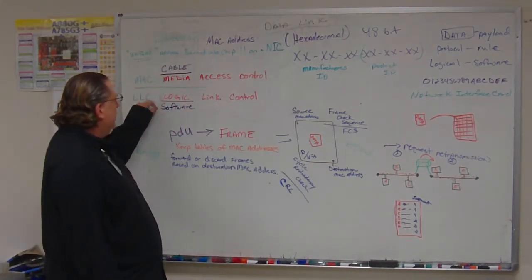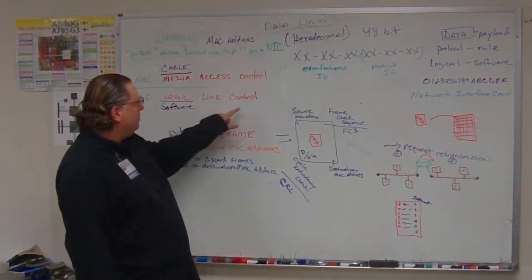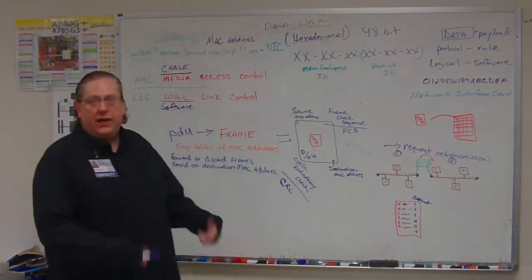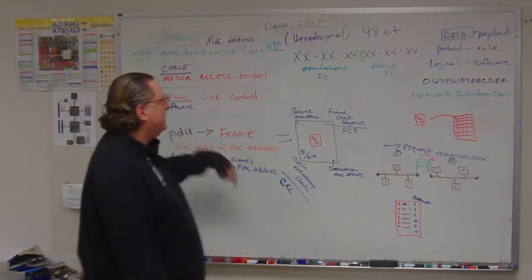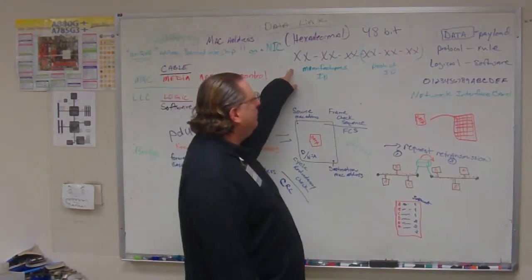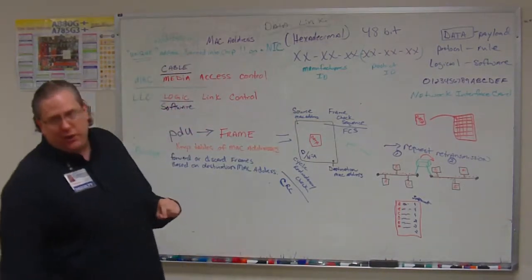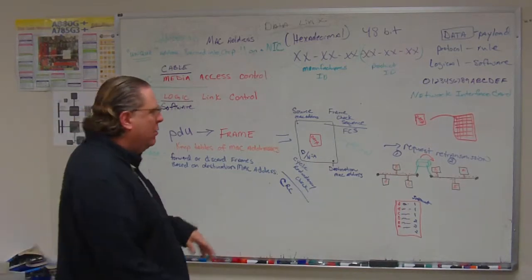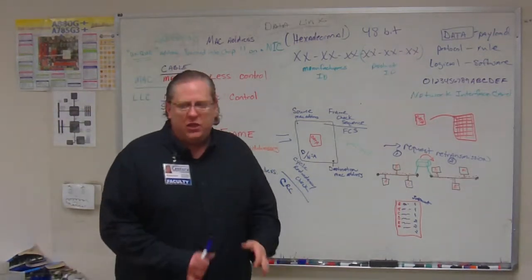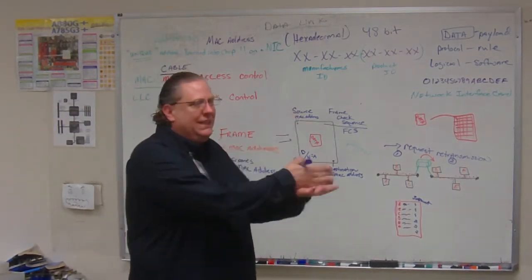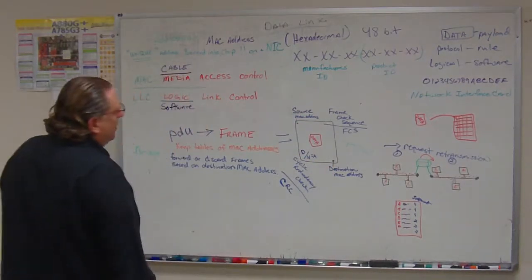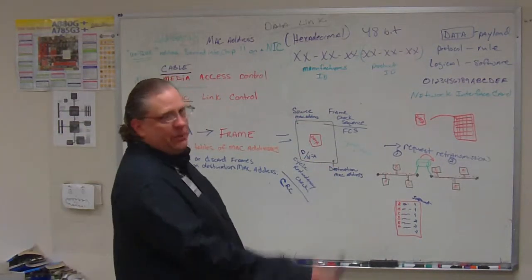We have the logic link control, which is a piece of software that helps us control access to the link by sharing that MAC address. Because the MAC address is actually burned into a chip on a NIC card. And if you're going to get a new one, you've got to throw the NIC card away. If it's burned out on the motherboard, then you just buy a new one and put it into a PCI slot.